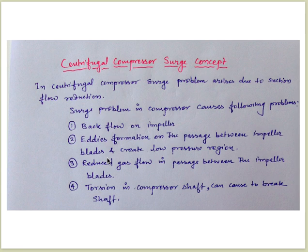Third, reduced gas flow in the passage between the impeller blades. Fourth, torsion in the compressor shaft, which can cause the shaft to break, because the backflow will try to rotate the compressor impeller in a different direction compared to the prime mover — such as an electric motor — which tries to rotate the compressor in the opposite direction. This torsion may cause the shaft to break.